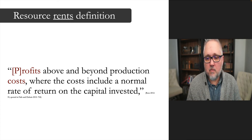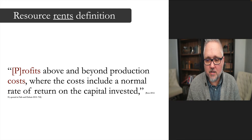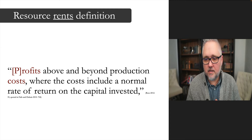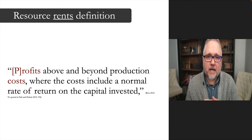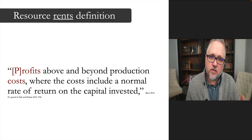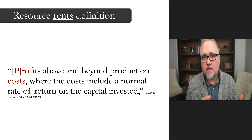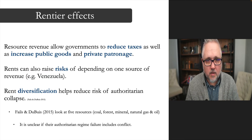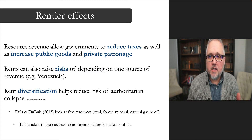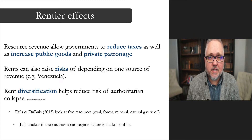How do we define resource rents? Using the Ross definition cited in Fails and DuBuis: profits above and beyond production costs, where costs include a normal rate of return on capital invested. Those resource rents can be distributed to private or public corporations, to individuals, to states, or to international actors that invest in developing countries to produce these resources. This could lead to potential rentier effects — resource revenues that allow governments to spend in ways that benefit their citizens and political leaders, potentially reducing taxes while increasing public goods and private patronage.